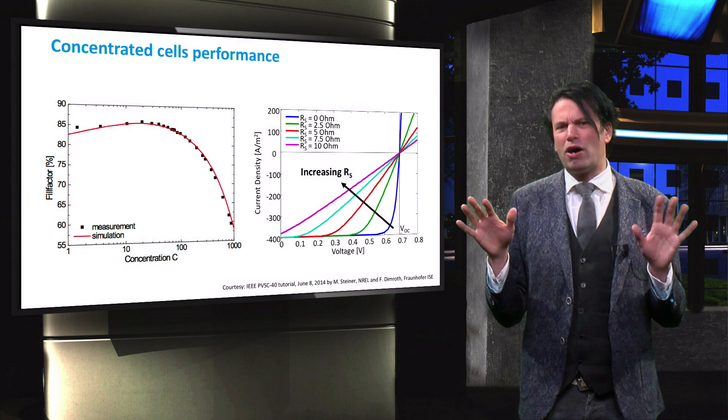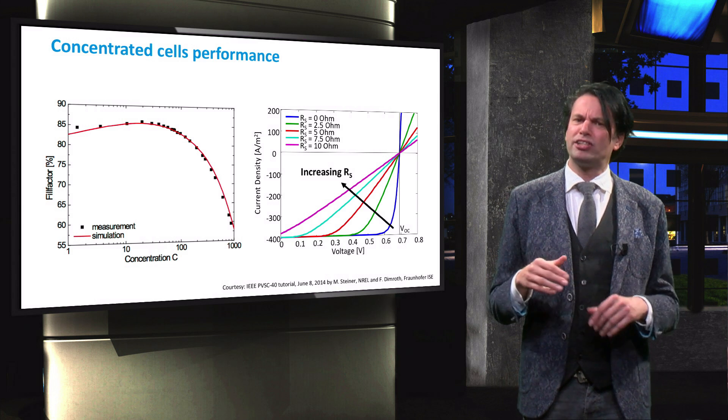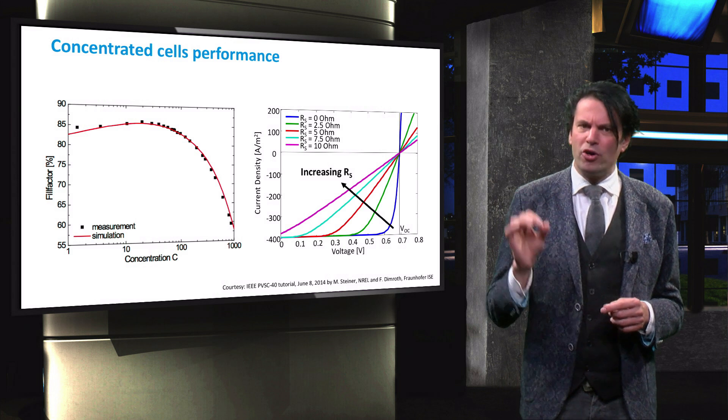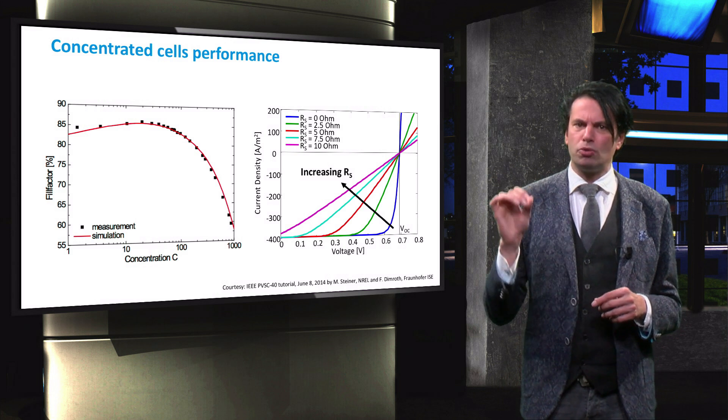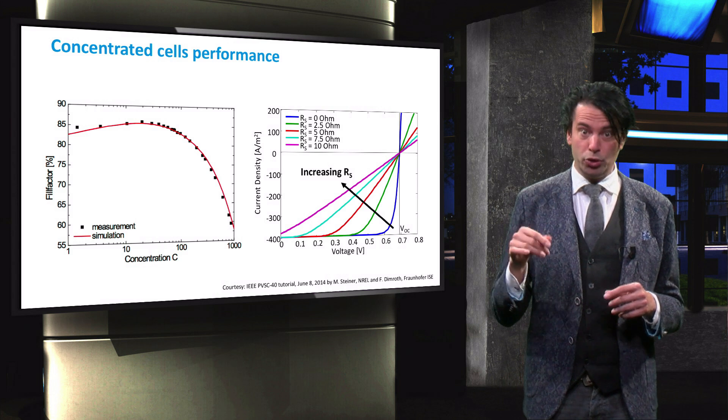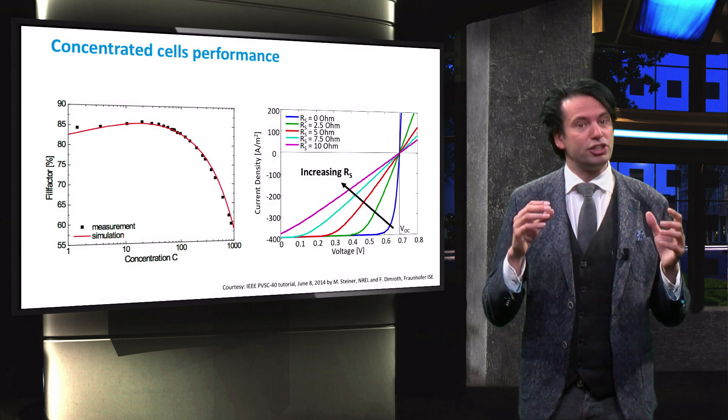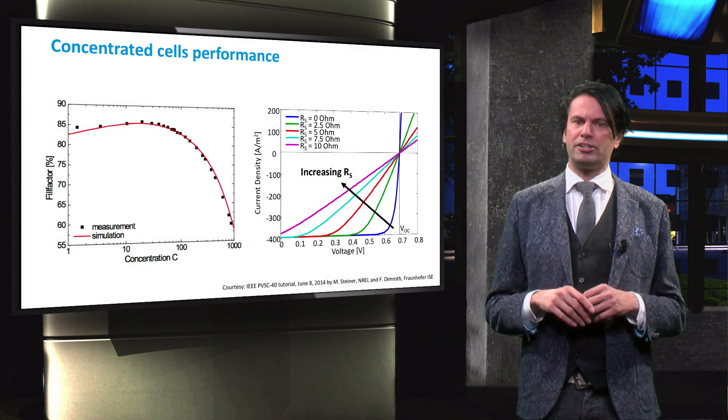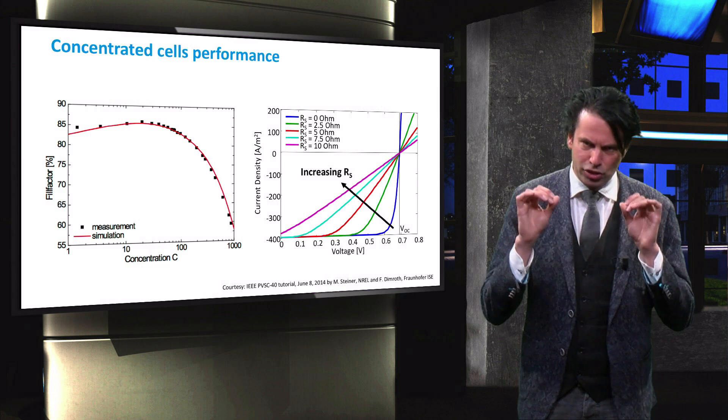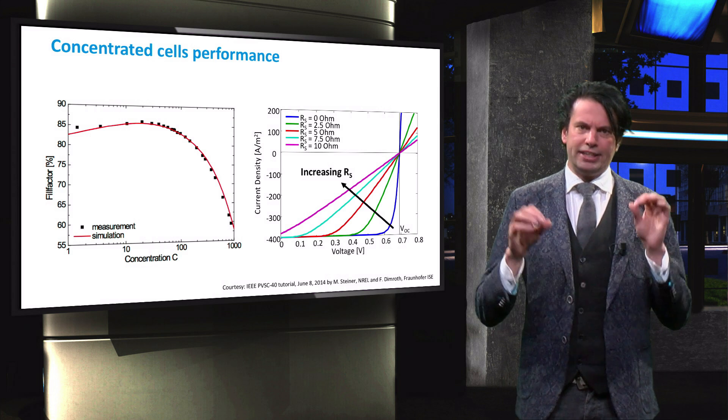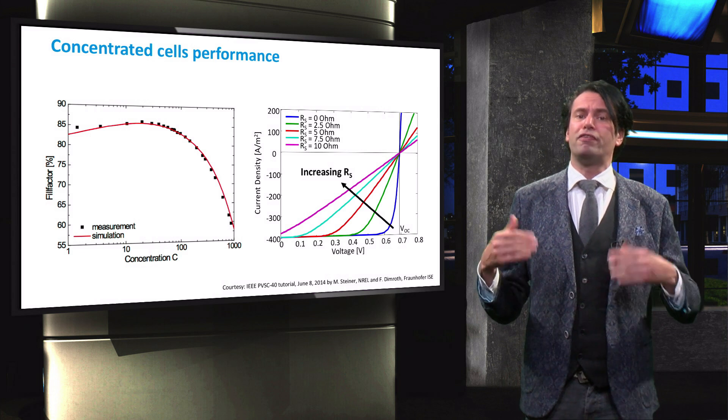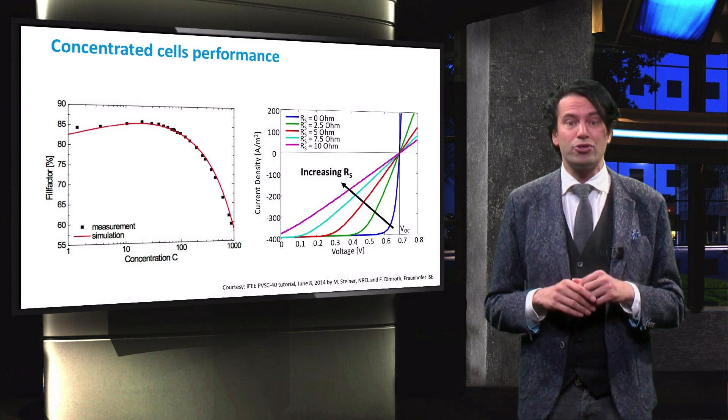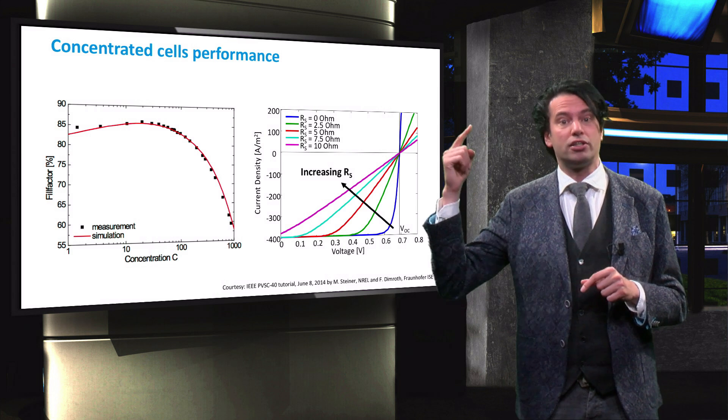Here the fill factor is plotted against the light concentration. Up to a concentration of about 50 suns, the fill factor remains insensitive to the light concentration. At some point, Auger recombination starts to play a more dominant role due to the large amount of generated carriers. This leads to increased bulk recombination and an increased series resistance. The increased series resistance causes the fill factor of this particular solar cell to decrease strongly for light concentration levels of over 100 suns.